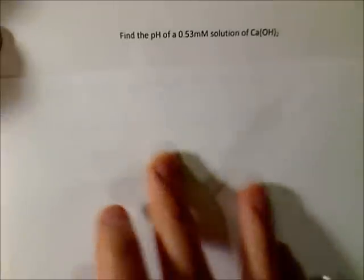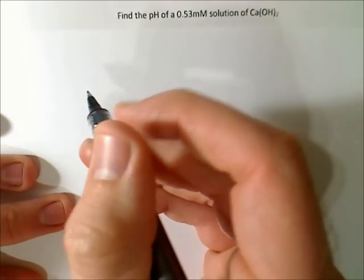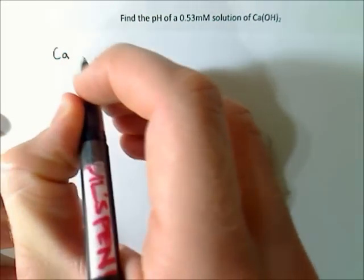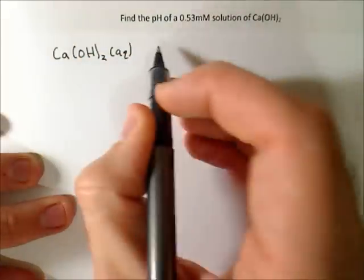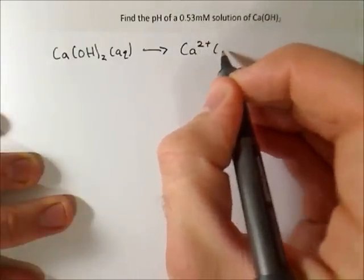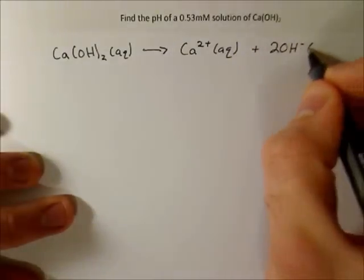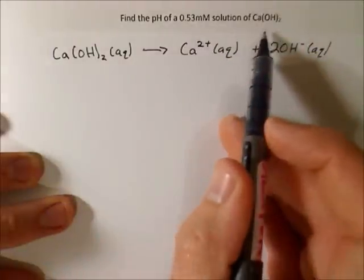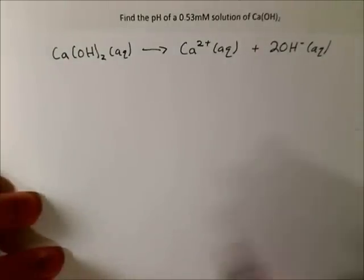Okay, so now we can do another problem with a base. In this case, we have calcium hydroxide. And so let's write out the dissociation equation. And make sure we're not forgetting that this is a strong base, and it completely dissociates. So we have two hydroxides produced. So we check that out.